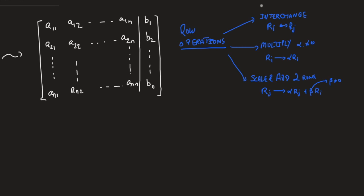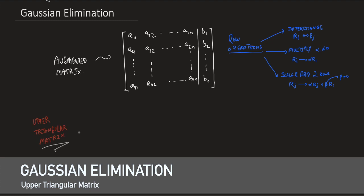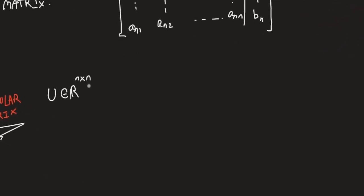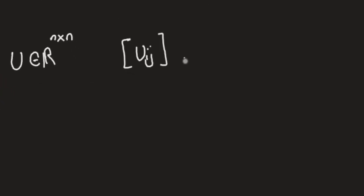So Gaussian elimination is based on a sequence of row operations until you obtain a row equivalent matrix that is upper triangular. So what is an upper triangular matrix? We say that a square matrix U, U for upper, is upper triangular if the elements of U_I,J are such that U_I,J is A_I,J for I less than or equal to J, and zero if I is strictly greater than J. That is to say, everything below the diagonal of the matrix is set to zero, and everything above could be or not be zero.